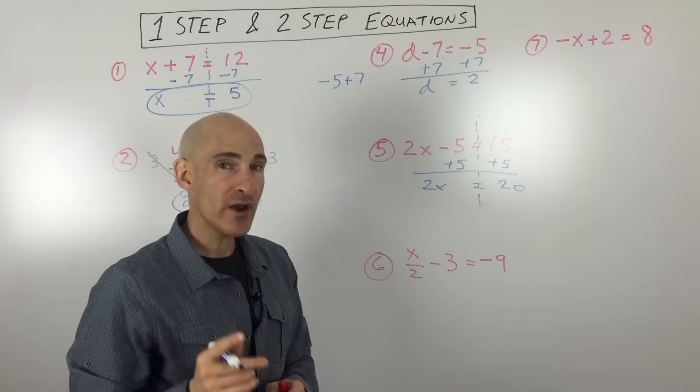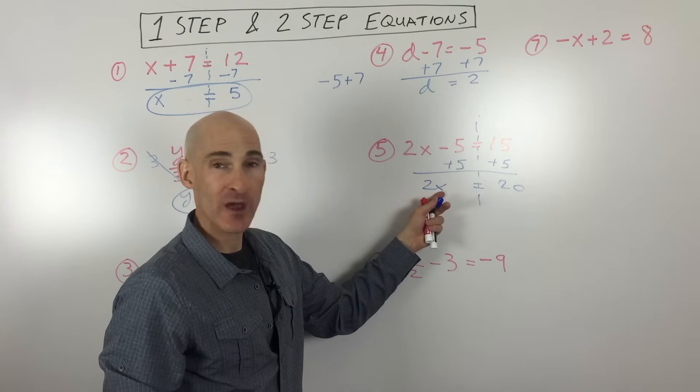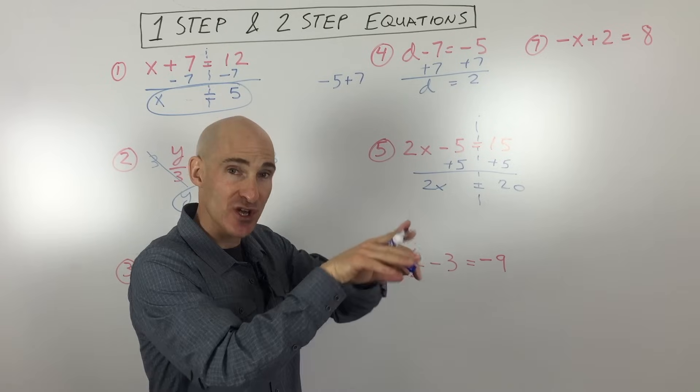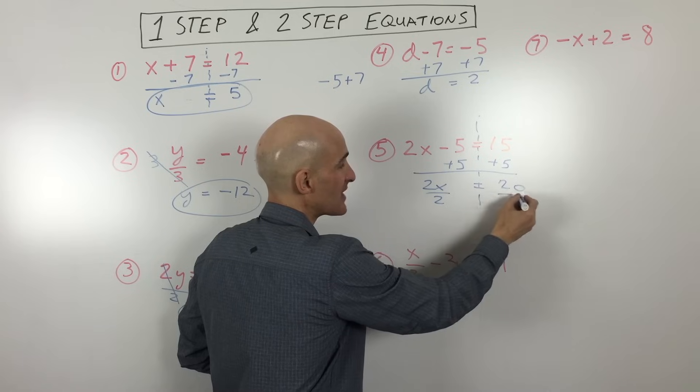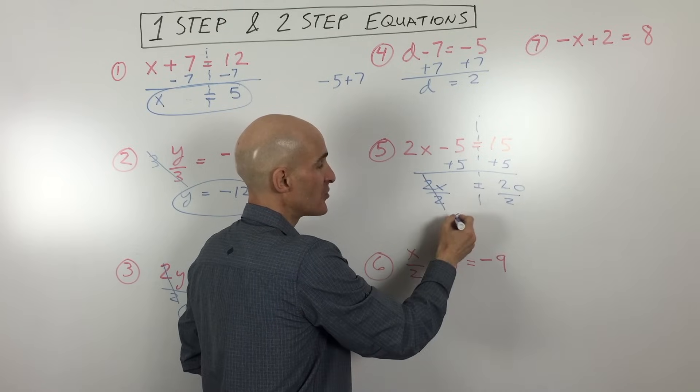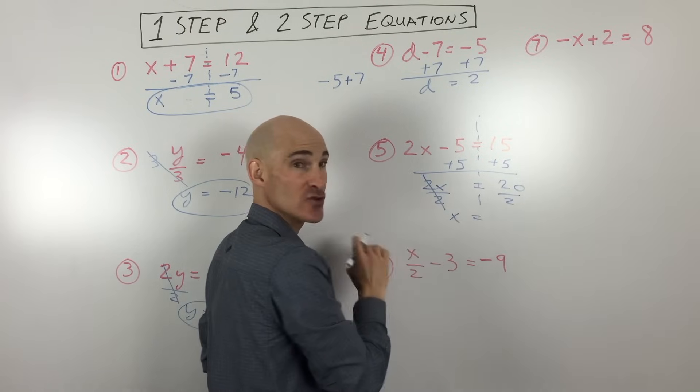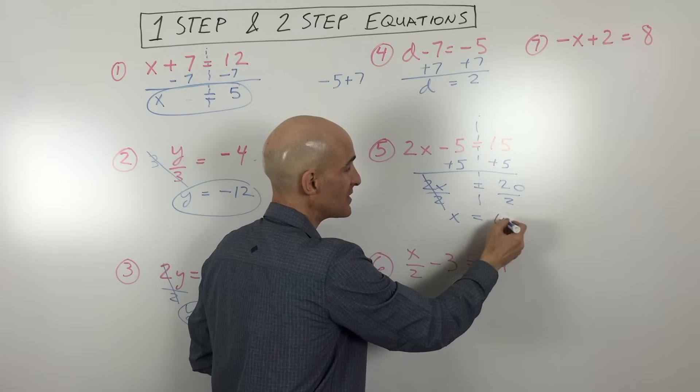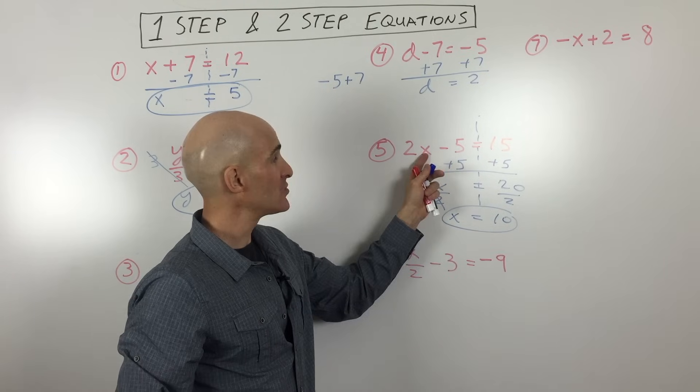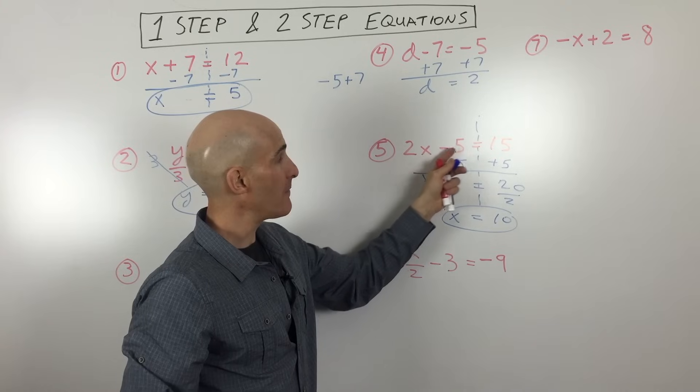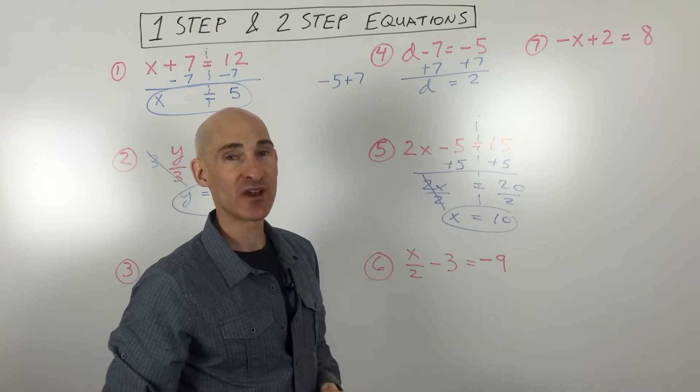Now, we always want to solve for just one of the variables. So the opposite of multiplying by 2, because these are right next to each other, that means that they're multiplied together, is to do the opposite, divide both sides by 2. You can see those are going to cancel one another out. 2 divided by 2 is 1, so we get 1x equals 10. Now, if you go ahead and put the 10 back in, 2 times 10 is 20, minus 5 is 15. So we know we've got the right solution.